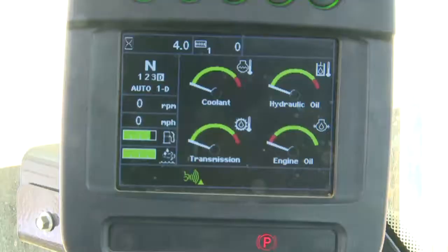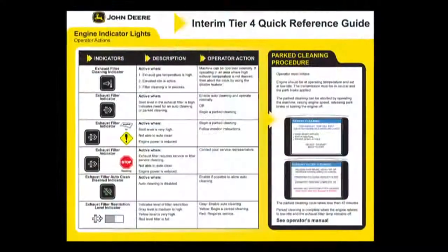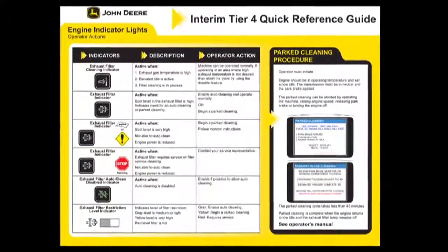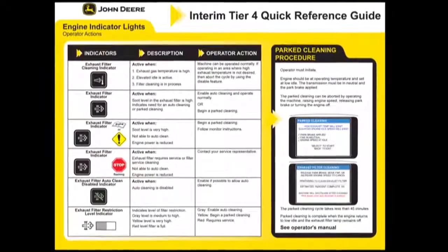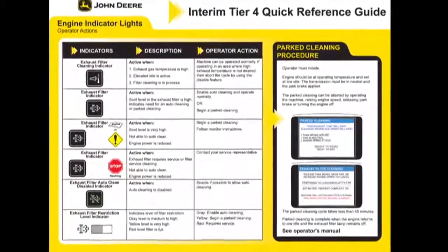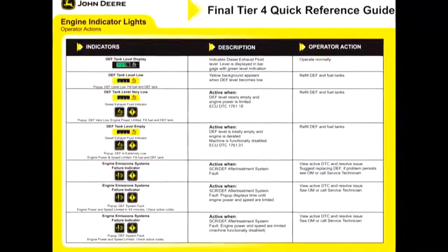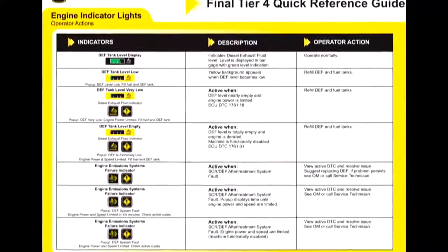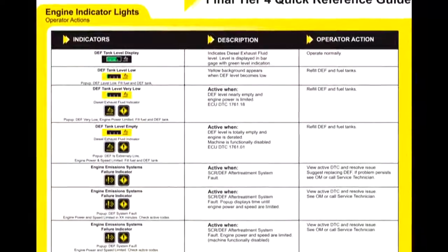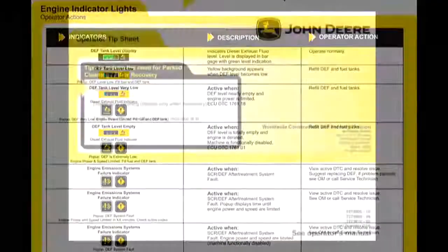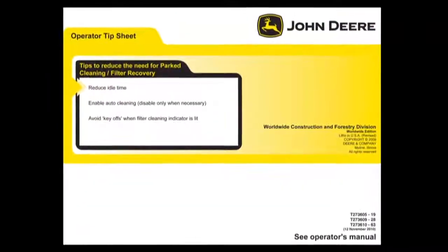It is corrosive to steel and will ruin the fuel injection system if the engine is run. The DEF tank level gauge is located in the monitor. In addition to the operator's manual, each machine comes with an interim Tier 4 or final Tier 4 quick reference guide. Printable files of these guides are located in the digital folders on this disk.